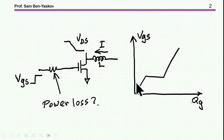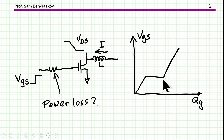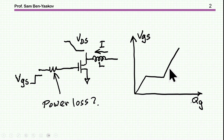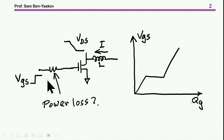At the beginning, as the voltage goes up, we are accumulating charge at the gate — this is like an almost linear capacitor. Then we have this flat part which represents a very large capacitance: this is the Miller effect. After that, there is another section which is also sort of a linear capacitor, although there is some non-linearity in it, as we'll see later on. So the question is: given this data, what will be the power loss of the resistor at turn-on?